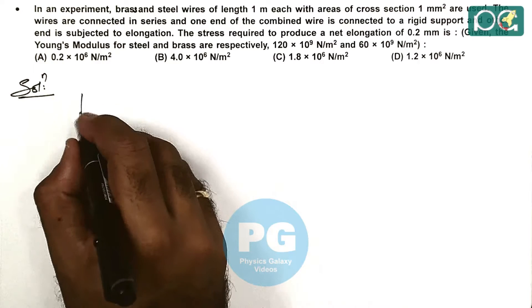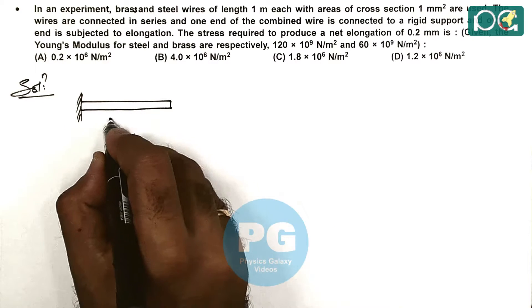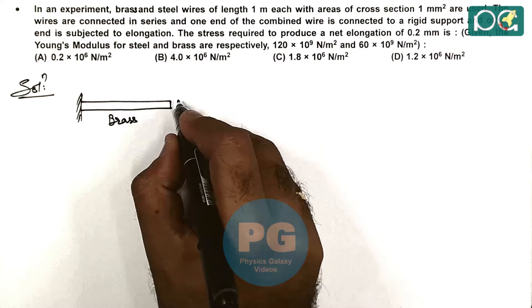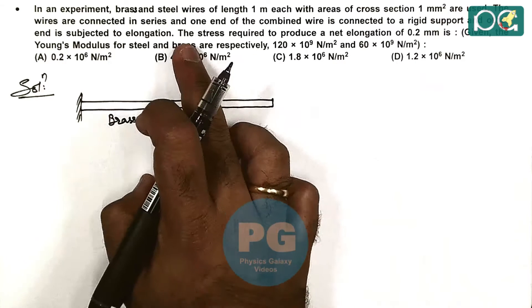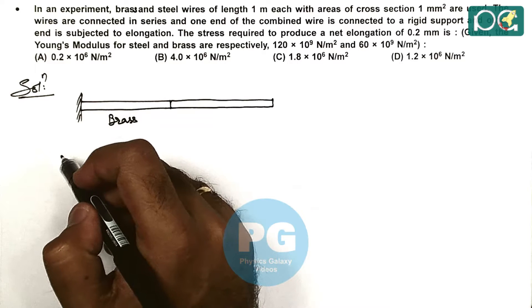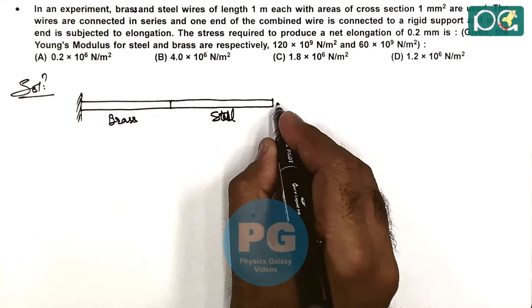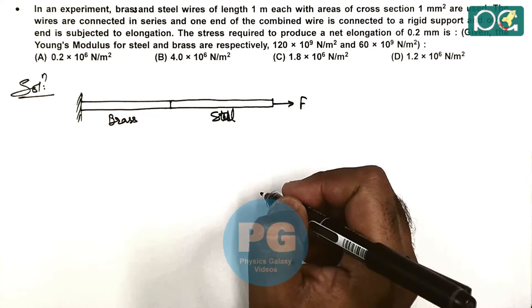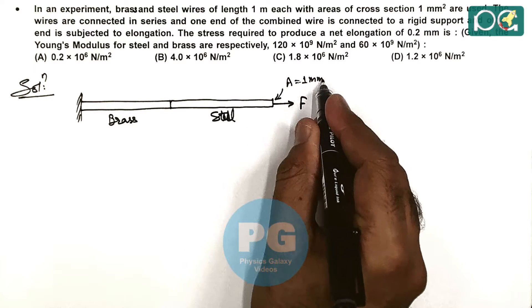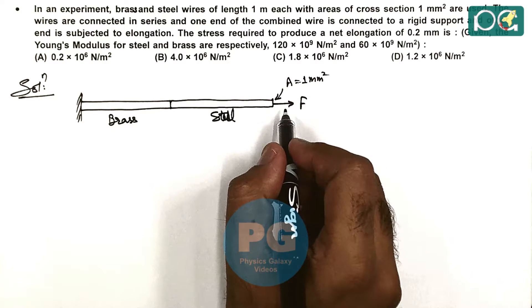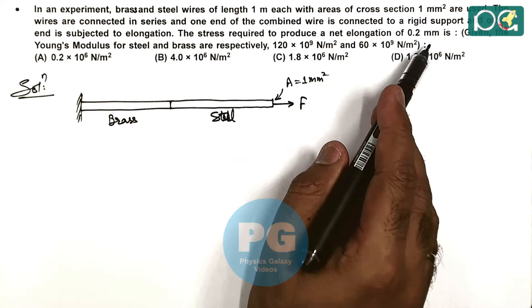We visualize the situation here: there's a fixed end, there are two wires, one is made up of brass and the other is made up of steel. They are joined end to end - the wires are connected in series. One end is connected to a rigid support and the other is subject to elongation, so here it is being pulled with an external force F. Area of cross section for both are equal, which is 1 mm².